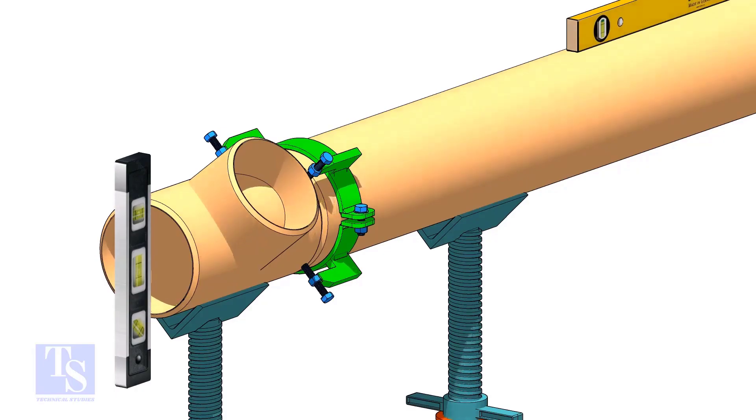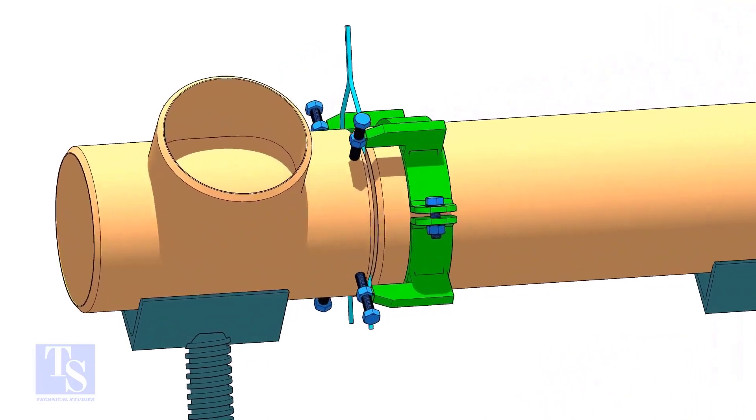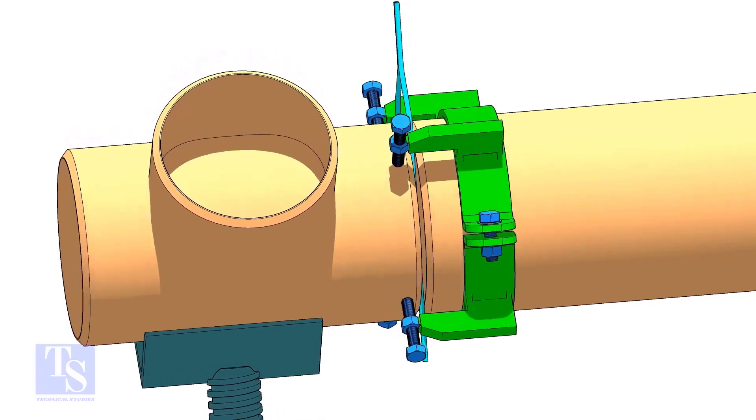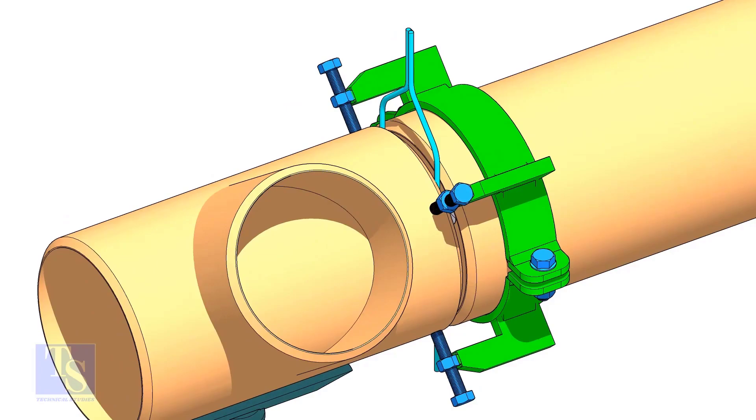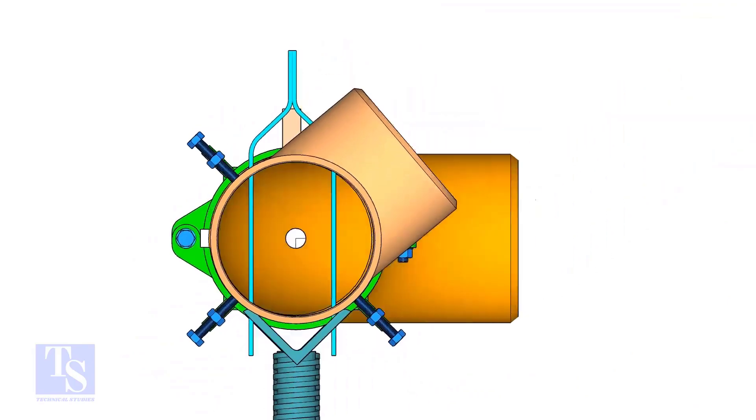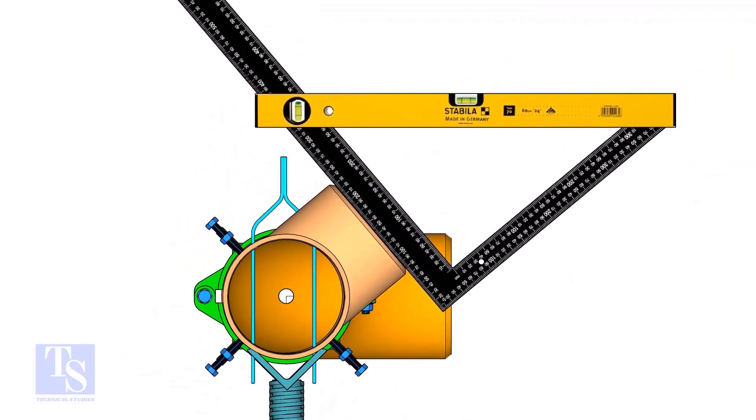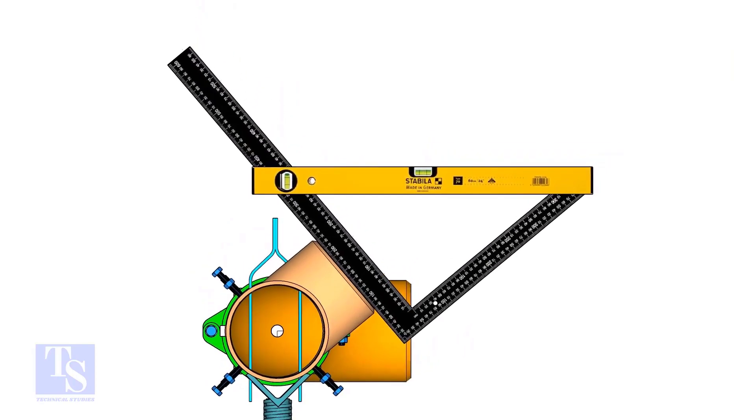Rotate the T in the required direction. Put the right angle on the T face and hold the level bottle on the right angle. The bottom edge of the level bottle shall pass through the markings.